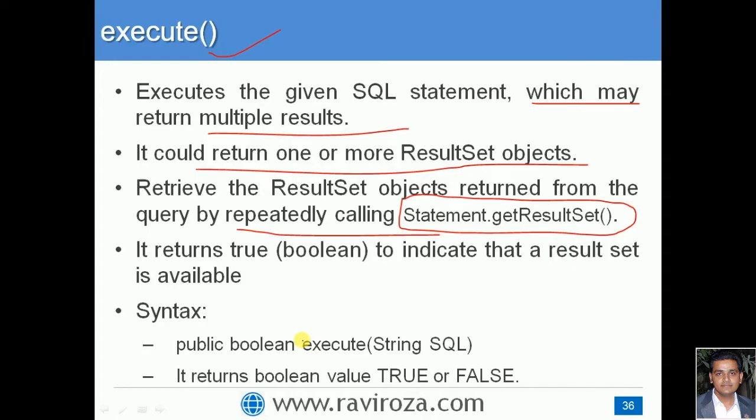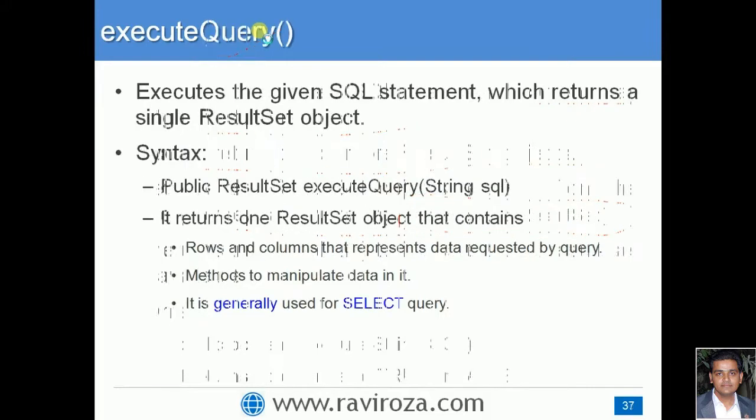For example, if you have a SELECT * FROM tableName query, a selection query is likely to have a ResultSet, so it is going to return true. But for other queries that do not return a result set, execute() returns false. This is the first method — execute().